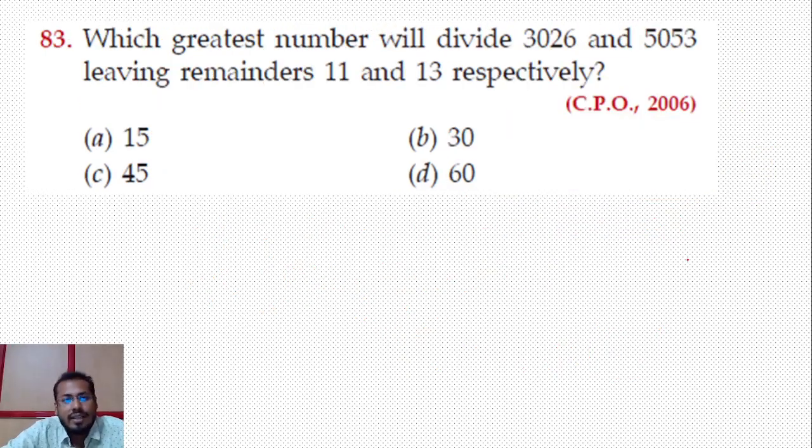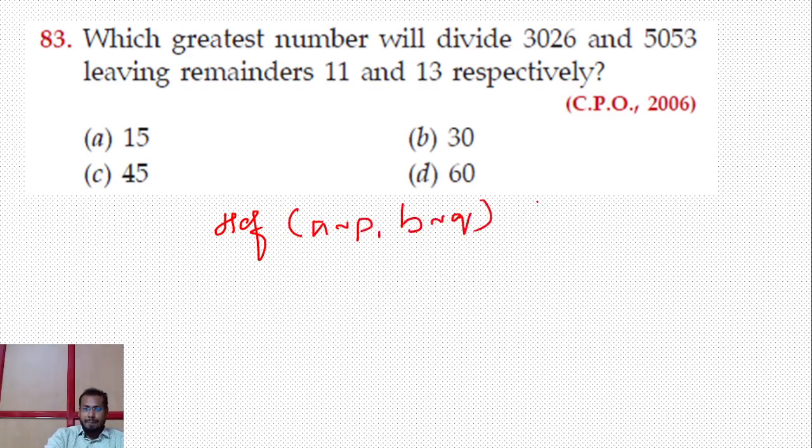Next question: Find the greatest number that will divide 964, 1238, and 1400 leaving remainders 41, 31, and 51 respectively. This is our formula: HCF of (A - P) and (B - Q), where P and Q are the reminders.